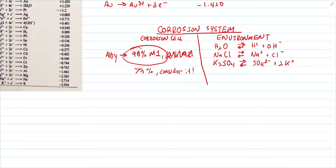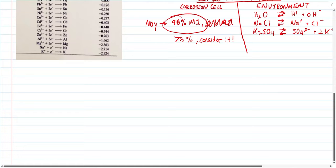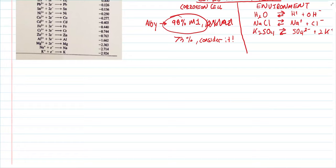This is a brief introduction to your corrosion system. Keep in mind: your corrosion cell is your metal — it must be three percent or higher in an alloy to be considered part of the corrosion cell. On the right side is your aqueous environment — water, salt water, or whatever else is in solution. Anything that's not your metal goes on the right-hand side.